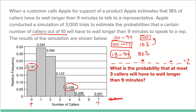For example, 18.1% of trials had zero people wait nine or more minutes. And 3.9% of trials had four callers wait longer than nine minutes. What's most likely is that only one person has to wait — that happened 34.5% of the time. Second most likely was two. It was very rare for five, and six never occurred. Seven, eight, nine, and ten also never occurred.